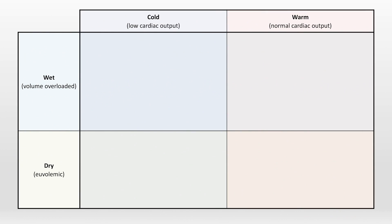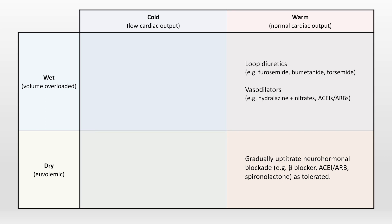Let's return to our 2x2 table of wet versus dry and cold versus warm, and discuss how treatment is different in each of these four categories. This model excludes isolated right-sided failure and high output failure, and when talking specifically about treatment, we will also be excluding heart failure with preserved ejection fraction. The easiest category is the warm and dry, also known as compensated heart failure. Patients here should have their neurohormonal blockade meds gradually uptitrated to target doses as tolerated. Warm and wet patients are also relatively straightforward, with treatment focusing on loop diuretics to improve preload and vasodilators to improve afterload.